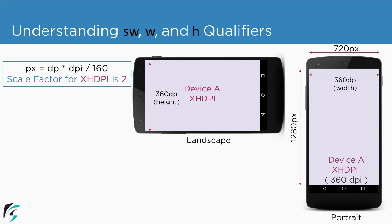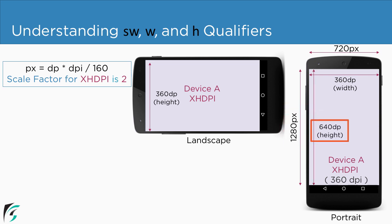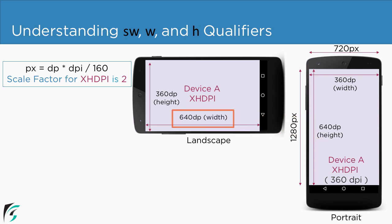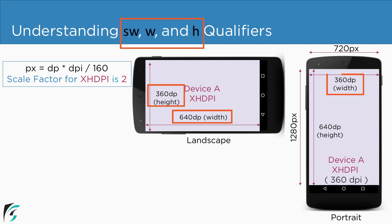What about the height in portrait mode? Again, divide this value by 2. We get 640 dp as the height in portrait mode. The same height in landscape mode becomes the width. The values of SW, W, and H lie in these values that we just calculated here.